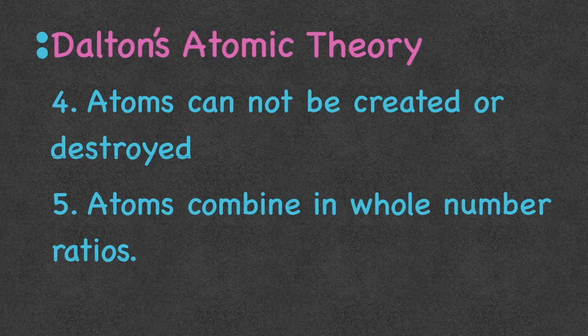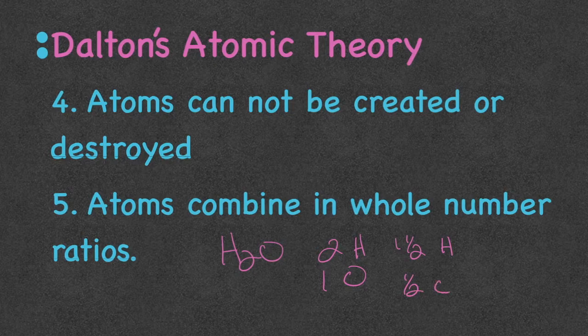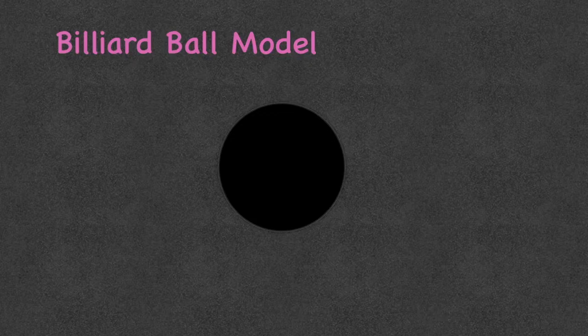This is when we're forming compounds. Compounds are made of atoms bonded together in whole number ratios. When we have water, H₂O, we have two hydrogen atoms and one oxygen atom. We can't have one and a half hydrogen atoms and half an oxygen atom — they have to form compounds with whole number ratios. Dalton thought atoms were just a solid sphere of matter that could not be destroyed or broken down.